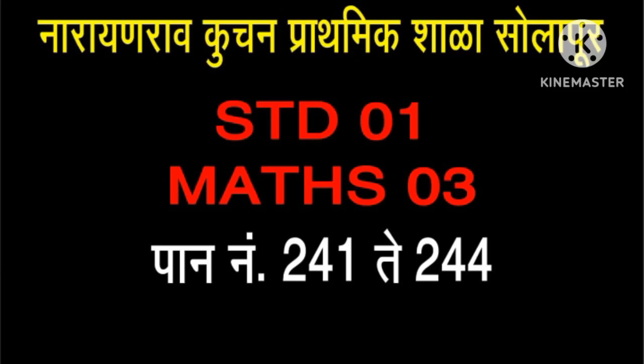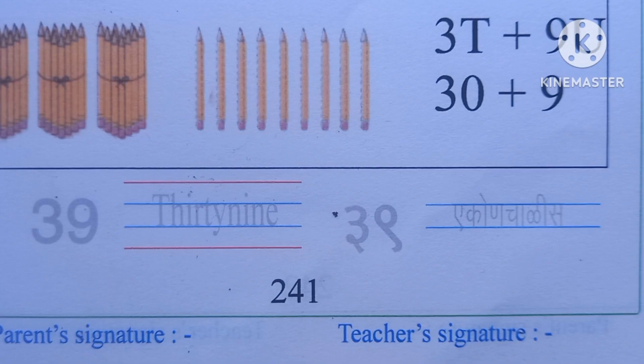Narayan Rav Kuchan, Prathamik Shah Solapur, Standard First Maths Part 3, Page numbers 241 to 244.